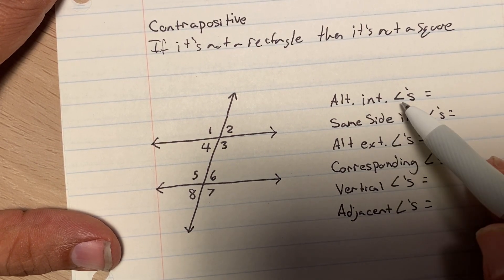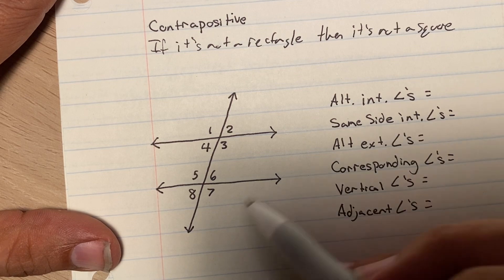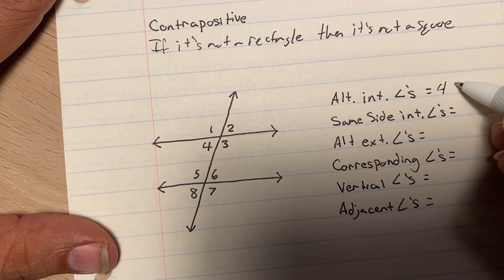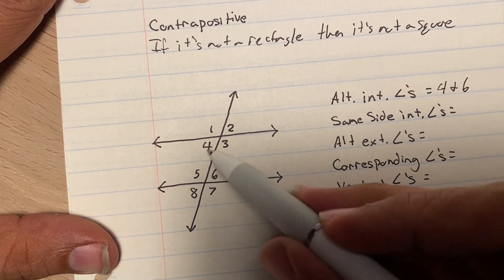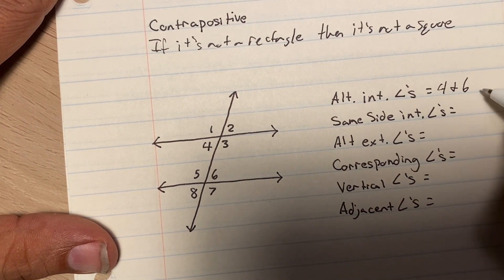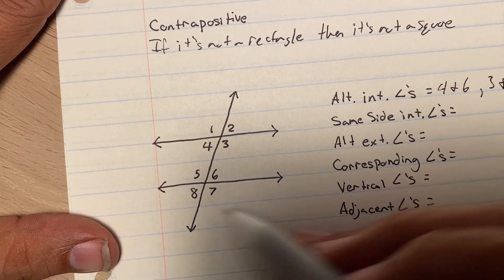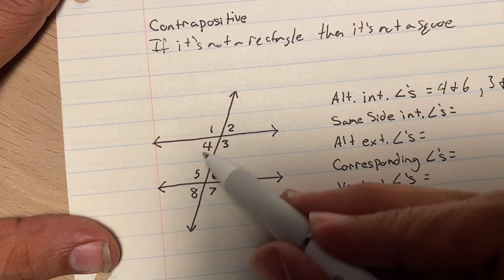So, alternating interior angles. Alternating interior angles are 4, 6, so 4 and 6 are alternating interior angles, or 3 and 5 are alternating interior angles.